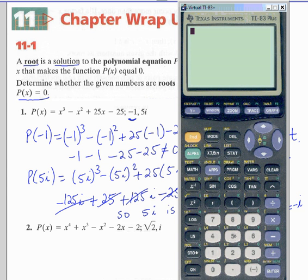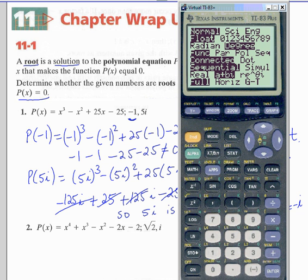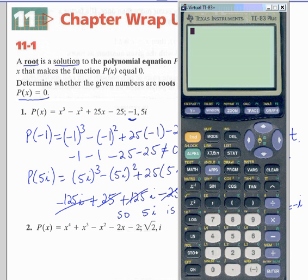We can use the calculator to check if we put the calculator in a plus bi mode, such as we have here. We can store 5i into x. So that's 5i, press store, and put that into x. So now x has 5i in it.